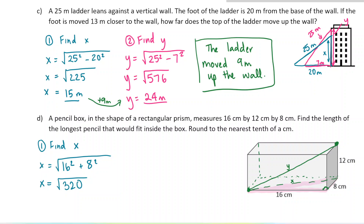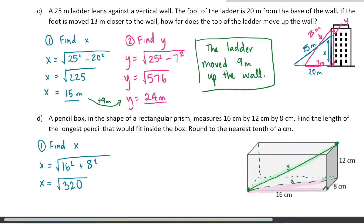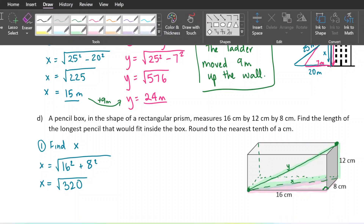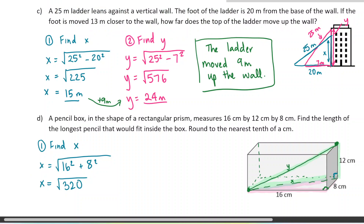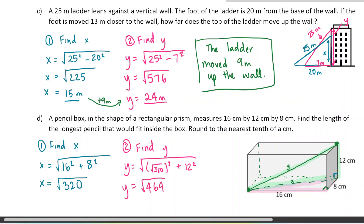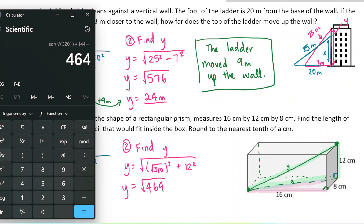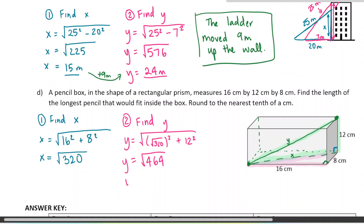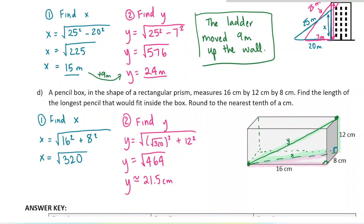Now I'll highlight the next triangle in green. For this one, the right angle is in this corner and I'm looking for the hypotenuse. Step two: find Y. Y equals the square root of — the square root of 320 squared is 320 — plus 12 squared. So we get 320 plus 144, which is 464. When we evaluate that, the question says round to the nearest tenth. Taking the square root gives approximately 21.5 centimeters.